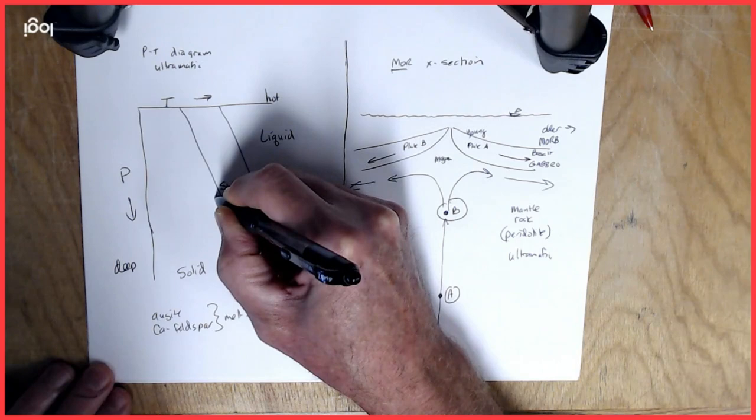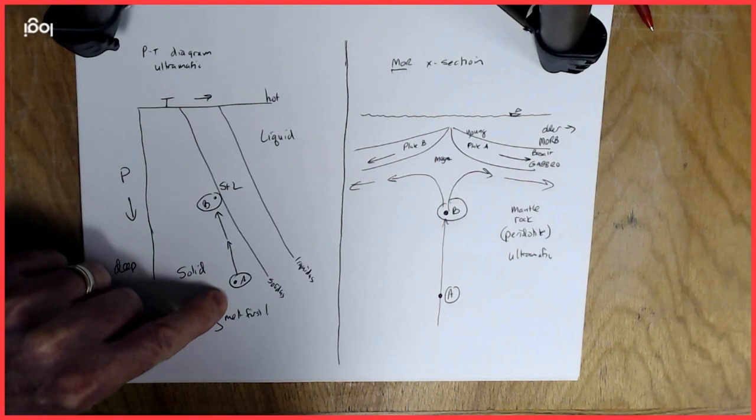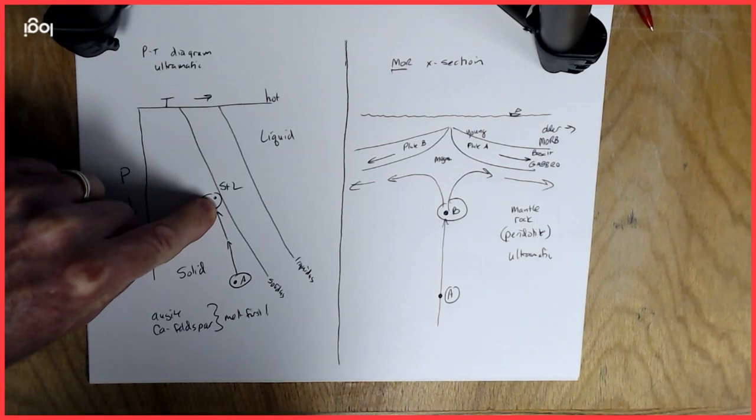That material will rise along a pressure and temperature pathway that will look like this in our pressure temperature phase diagram. It loses a lot of pressure and only a little bit of temperature.